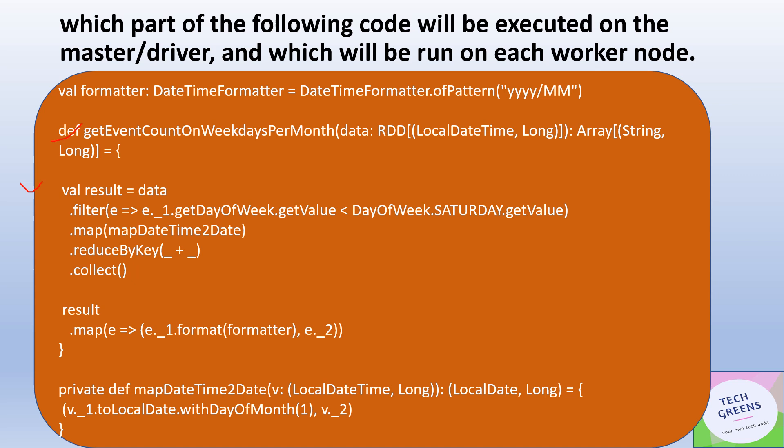Here we have a method called `getEventCountOnWeekdaysPerMonth`. It takes one RDD with LocalDateTime and a long value, and returns an array of String and Long. The data is filtered based on some logic, then we have called `map`, then `reduceByKey`, and then `collect`.